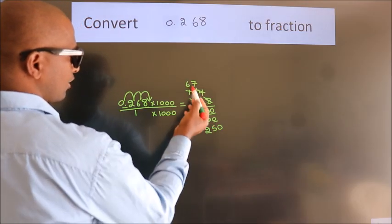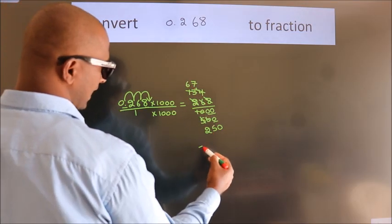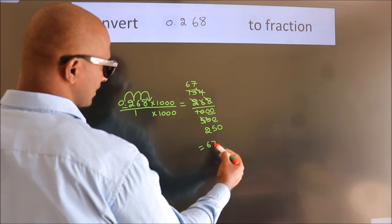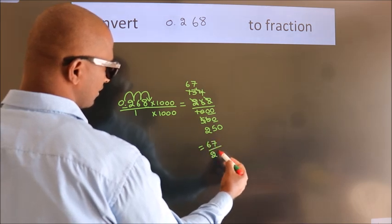Further cannot be simplified. So, our fraction is 67 by 250.